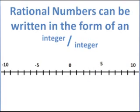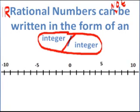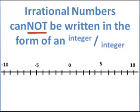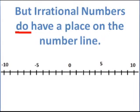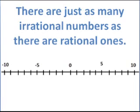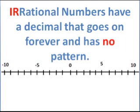Rational numbers can be written in the form of an integer over an integer. Irrational numbers cannot be written in the form of an integer over an integer — cannot be written in that form. Irrational numbers are not exact in our decimal system, but irrational numbers do have a place on the number line. There are just as many irrational numbers as there are rational ones. Irrational numbers have a decimal that goes on forever and ever and has no pattern.